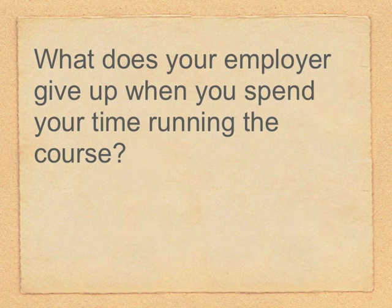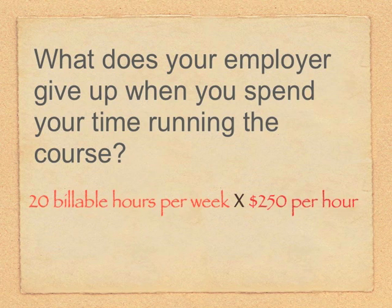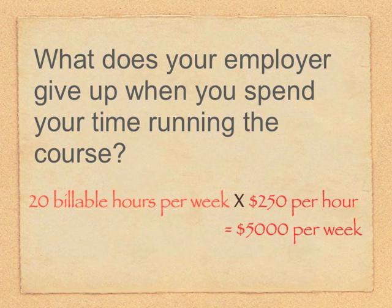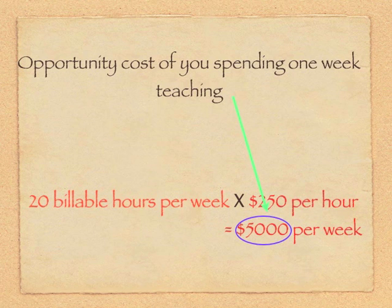First, who is going to teach the course? Well, you are. But from your company's perspective, you are not free. If you spend a week teaching the course, then the work you would have done during that week will not be done. Let's suppose that in an average week, your company bills 20 hours of your time at $250 per hour — in other words, from the company's perspective, you bring in $5,000 revenue on an average week. If you teach the course for a week, the company will forego that $5,000 in revenue. This is the opportunity cost to the company of your time — by diverting your time to teach the course, the company gives up $5,000 in consulting revenue.